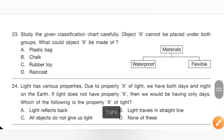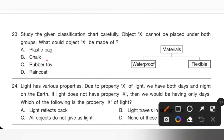Question 23: Study the given classification chart. Object X cannot be placed under both groups. What could object X be made of? Options: A. Plastic bag, B. Chalk, C. Rubber toy, D. Raincoat. Plastic bag, rubber toy, and raincoat are waterproof and flexible. But chalk is neither waterproof nor flexible. So option B, chalk, is the correct answer — object X cannot be placed under either group.